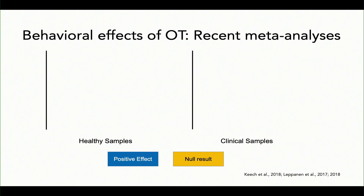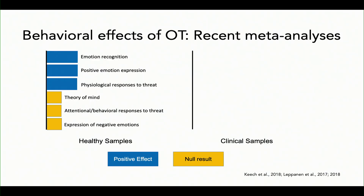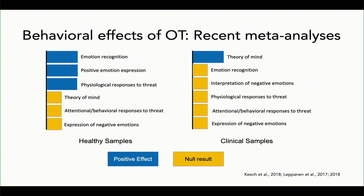I want to show you some behavioral effects of oxytocin according to some recent meta-analyses. In healthy samples, it looks like we have some findings related to emotion recognition, positive emotion expression, and physiological responses to threat, and then several null findings. It looks a little different in clinical samples, where you see a small positive effect of theory of mind, and then a series of null findings.